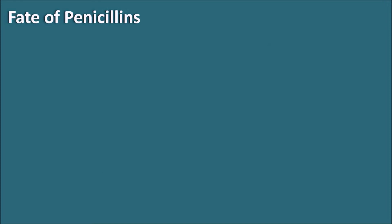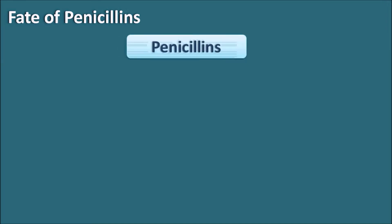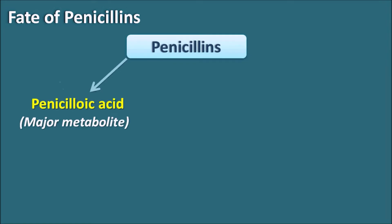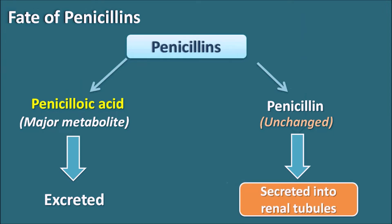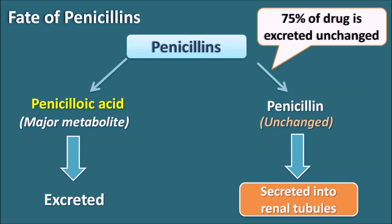Let us see the fate of penicillins. When penicillins are administered into the body, they can be converted into their metabolite penicilloic acid, which is the major metabolite. On the other hand, penicillins may not be metabolized and are excreted unchanged in the urine. The metabolite penicilloic acid can be conjugated and then excreted in the urine, whereas unchanged penicillin is secreted into the renal tubules by renal tubular secretion. About 75% of penicillin is excreted unchanged in the urine, so renal tubular secretion is one of the important processes in penicillin excretion.